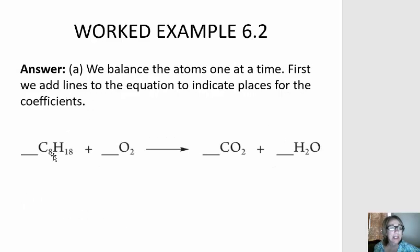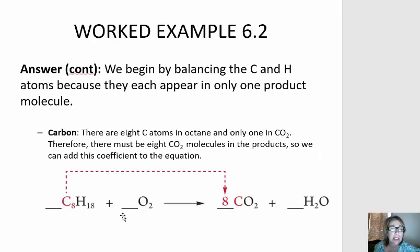So when we balance a chemical equation, it's really useful to write these little lines in front of each chemical formula because that reminds us that it's the coefficient that we change when we balance a chemical equation. We see that we have 8 carbon atoms on our reactant side, and if we place a coefficient of 8 in front of the carbon dioxide, we have balanced our carbons.